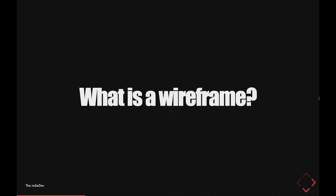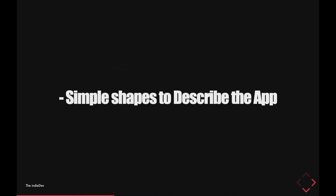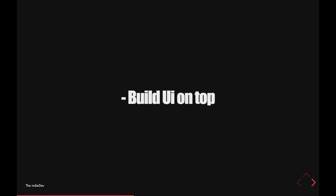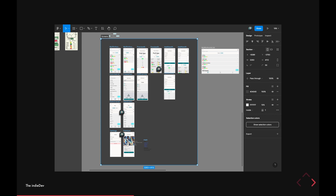If you don't know what a wireframe is, a wireframe is the structure of an app. It's a cheap and quick way to iterate — to edit your idea over and over, each time making it a little bit better. Using simple shapes to describe the elements that will be in your app, the pages, the user flows, while removing the overhead of thinking about style like color, typography, and spacing, and focusing on the structure and functionality of the app. When you've got a solid structure, you can build your UI design on top of it.